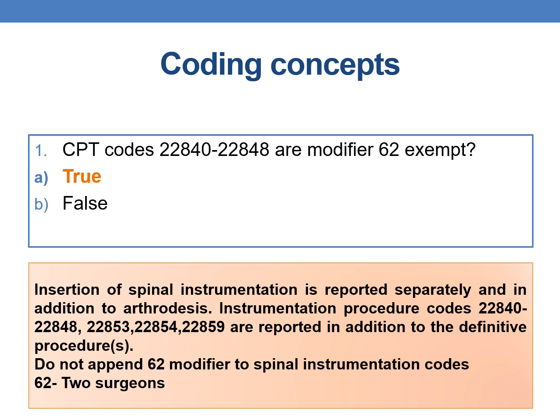Coming to the first question in CPT coding concepts: CPT codes 22840 and 22848 are modifier 62 exempt. The options are true or false, and the correct answer is true.